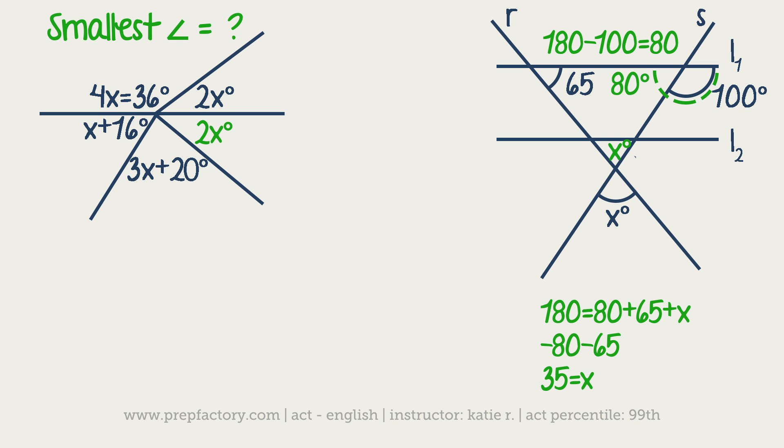In order to find what the smallest angle is, we are going to have to find what X is equal to. We're going to use something here that's pretty much just like supplementary lines. We have all of these different angles, they all are within a circle, which means that if you add them all up, they have to equal 360 degrees. So we could start this out by saying 360 is equal to all of the angles.